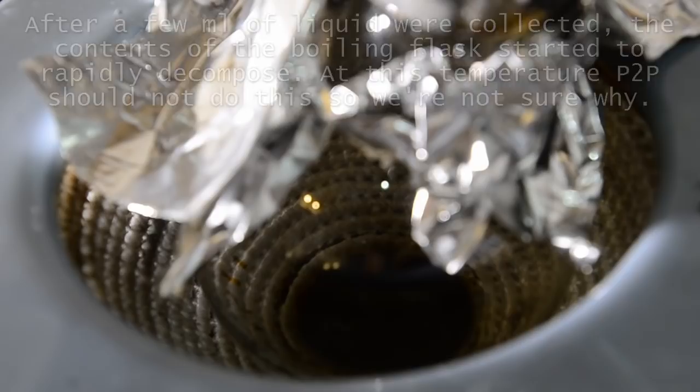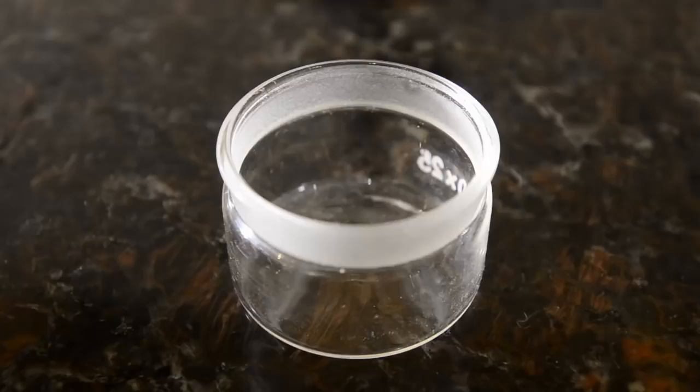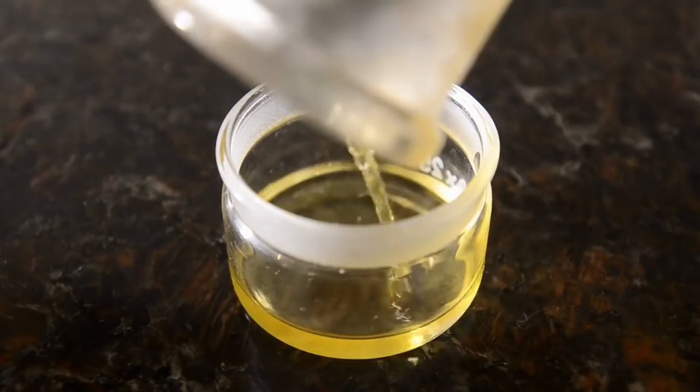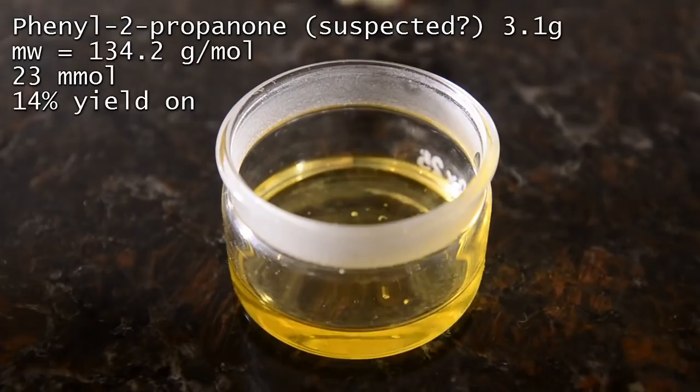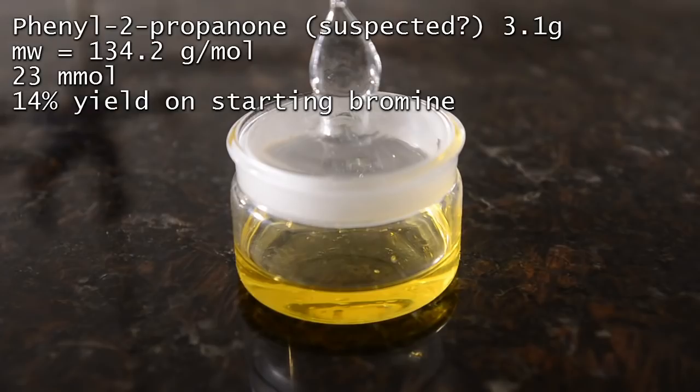We got 3.1 grams of the yellow oil with a very interesting aroma. Sweet and somewhat similar to propiophenone, but without the spiciness and with a slightly more pine needle and Christmas tree overtone. If this is phenylacetone then it's a 14% yield from bromine, the limiting reagent in the reaction. This isn't great, but actually we're quite surprised that we got anything from this.